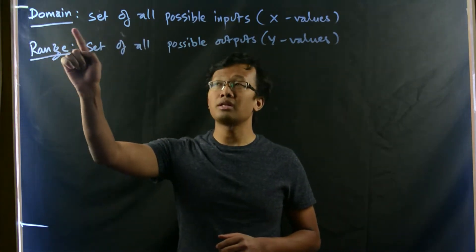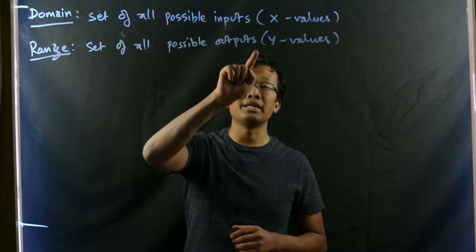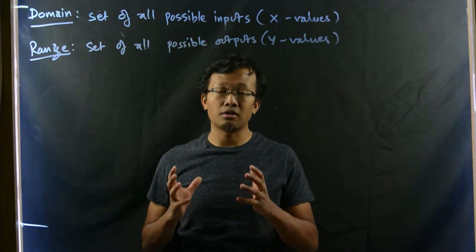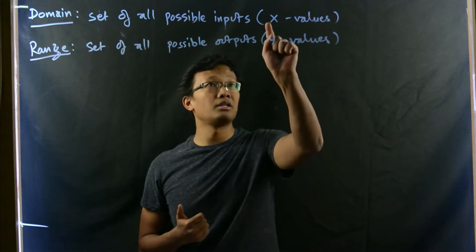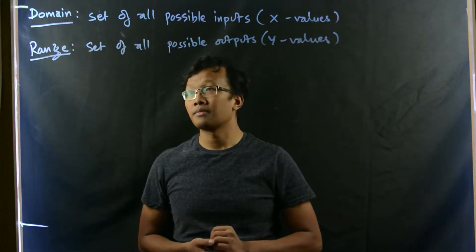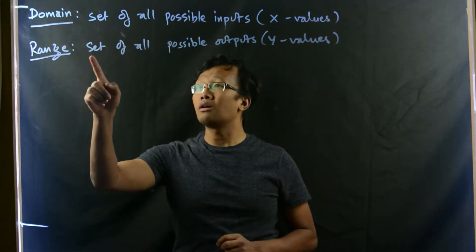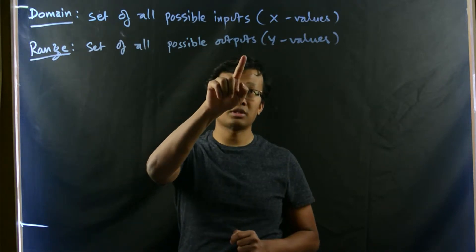we can understand the domain is the set of all possible inputs. All the collection of inputs is the domain, or all the x values. And range is all possible outputs, or the y values.